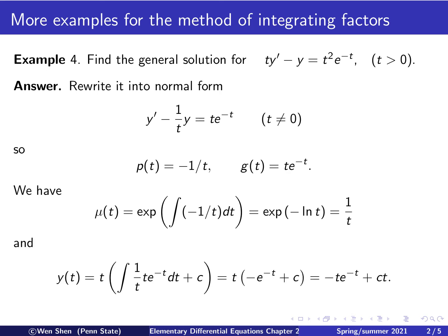Finally, we form the solution using mu. The solution is 1 over mu — which is t — times the integral of mu times g. We see that 1 over t and t cancel, so we just integrate the exponential function. This gives negative e to the negative t plus an arbitrary constant. Distributing the t, we get negative t e to the negative t plus c times t, which is the general solution.